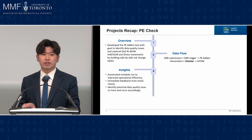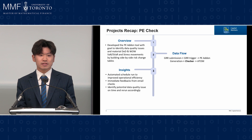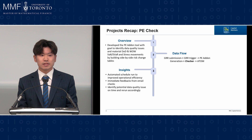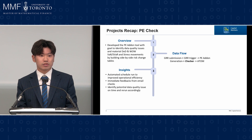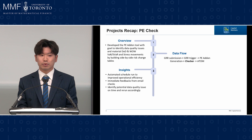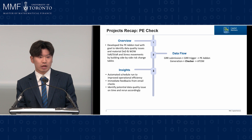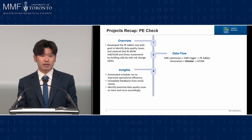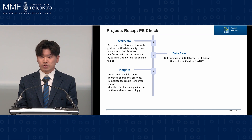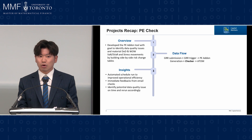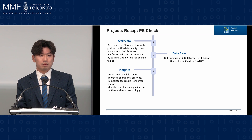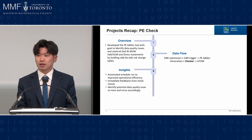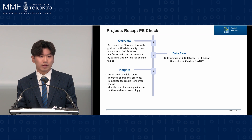The first project I'm going to share is called the PE Check. PE stands for the Production Engine. It's a PE add-on tool which goes to identify the data quality issue and material day-over-day, week-over-week, VAR and stress movement by building side-by-side risk change tables. By looking at the data flow, our checker comes in after the PE add-on generation is complete, making sure there's no data quality issue before pushing all the data to add-on, which is the largest risk platform in GRM.